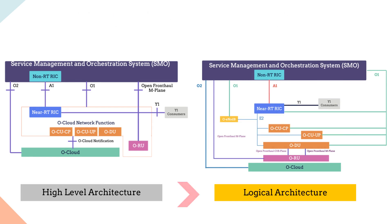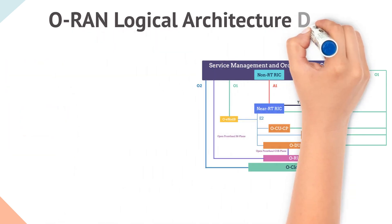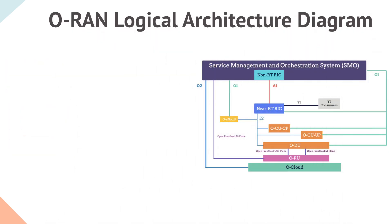In this logical architecture, let's start with the O1 interface, which is an interface between SMO and ORAN managed elements such as CU-CP, CU-UP, ODU and eNodeB. One can see in this diagram that near-RT RIC also has access to the O1 interface.